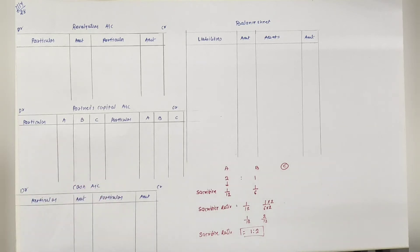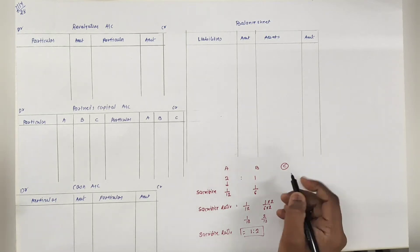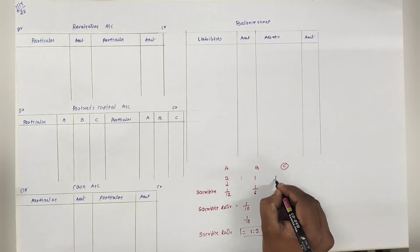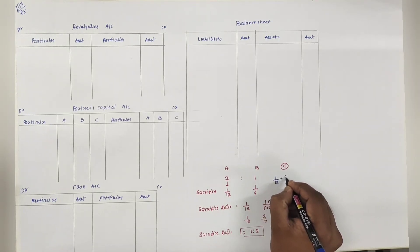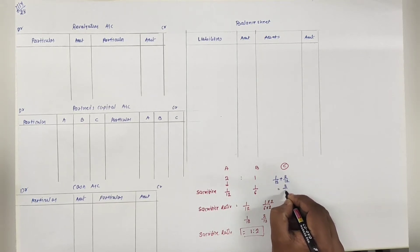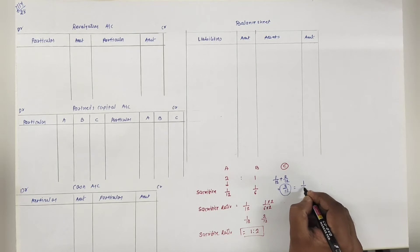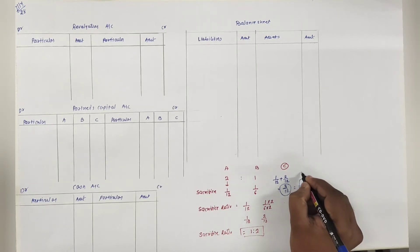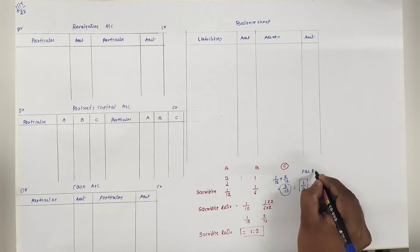और C को कितना मिलेगा? C का new ratio - means profit and loss का ratio कितना रहेगा? तो 1/12 A देगा, 2/12 B देगा, total 3/12. इसको cut करेंगे तो आएगा 1/4. तो C का profit and loss ratio मिल गया.